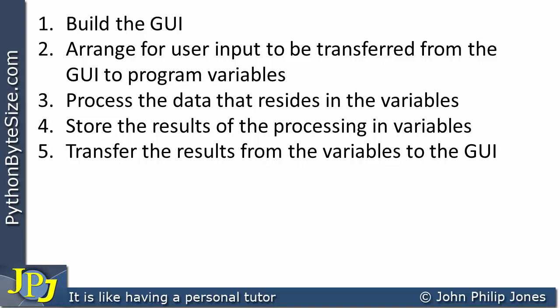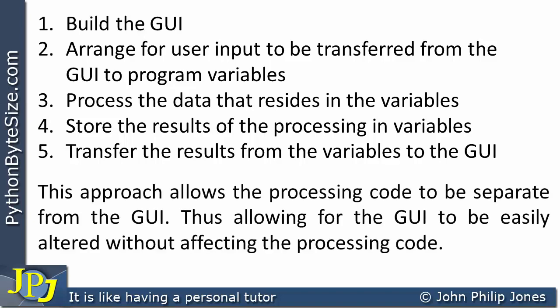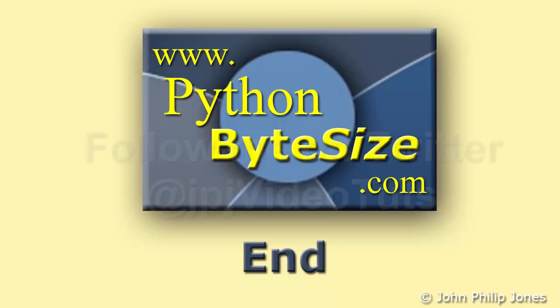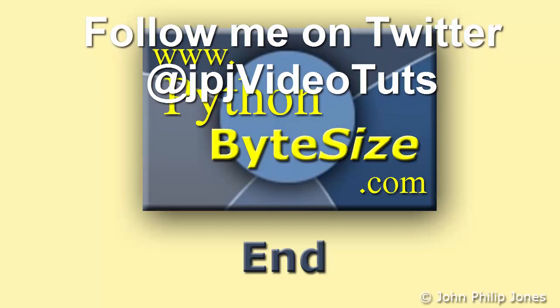The fourth step is to store the results of the processing in variables, and the fifth is to transfer the results from the variables to the graphical user interface. Those are the five steps to keep in mind when building programs that involve graphical user interfaces. This approach allows the processing code to be separate from the GUI, making it easy to alter the interface without affecting the processing code. For example, you might use an entry box or a slider bar to enter integers — if the data goes to a variable, the processing code is unaffected; you just need to update the GUI and route the new widget's data to the same variable.